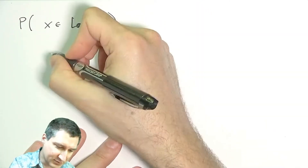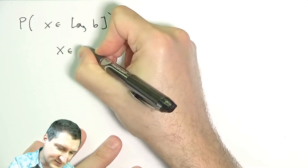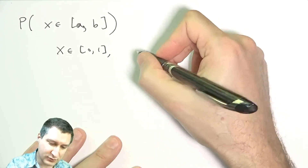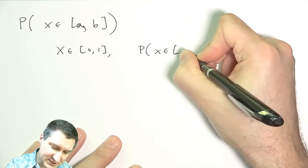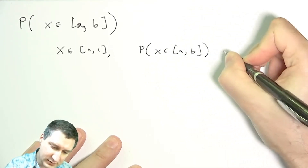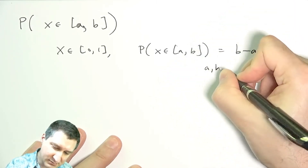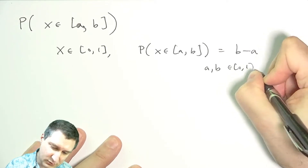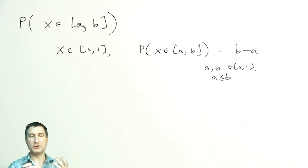Suppose again that X is in zero to one, and we assign a rule that says the probability that X is in the range A to B is equal to B minus A, where A and B are in zero to one and A is less than B. This is a rule that tells us how to assign probabilities to ranges.